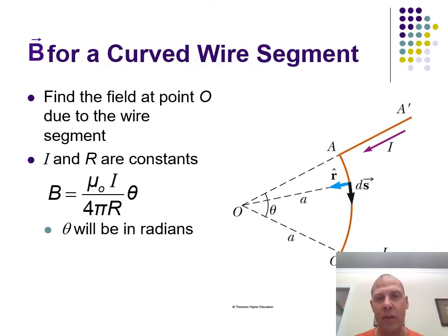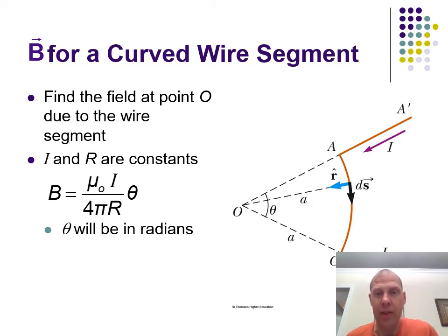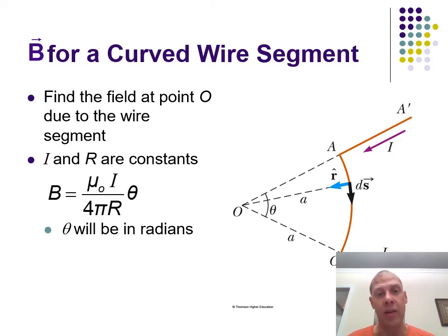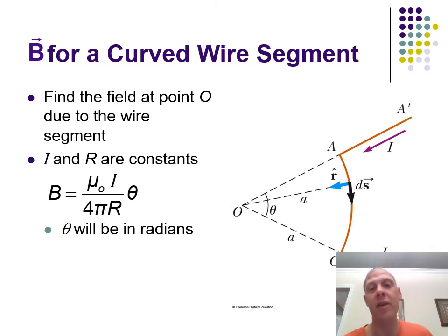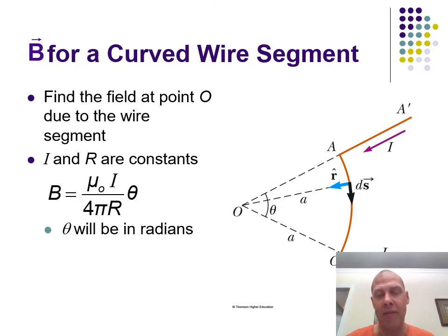The best use of Biot-Savart law is when you have a point P where you want to know the magnetic field because of a nearby wire running in an arc to that point. Everything becomes perpendicular, so you get rid of the sine theta piece, and all you need is μ₀I / (4πR) times theta — the length of the arc in radians. For example, for a half circle at the center point, theta is π radians, so you just multiply by π.